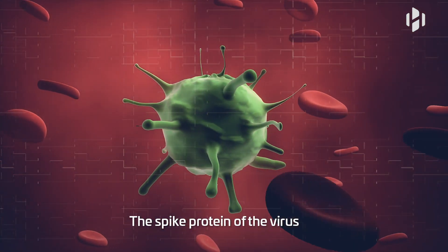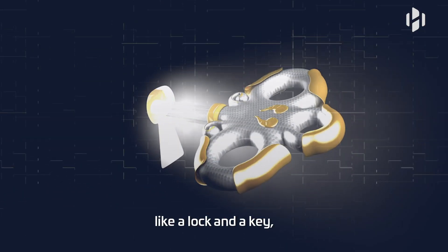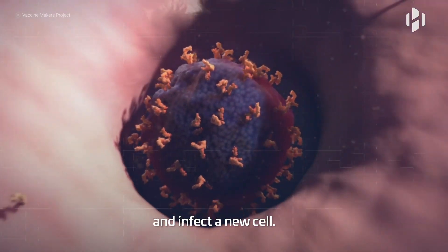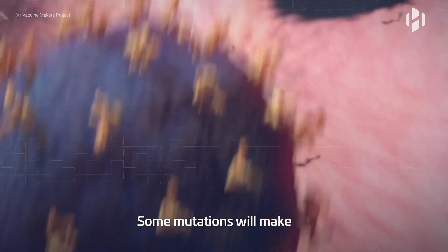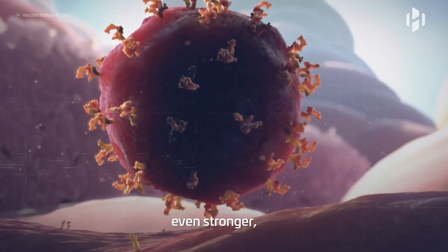The spike protein of the virus binds to the ACE2 receptor of the host cell like a lock and a key, allowing it to enter and infect a new cell. Some mutations will make the binding between the spike protein and the ACE2 receptor even stronger, which increases the chances of the virus entering more host cells.